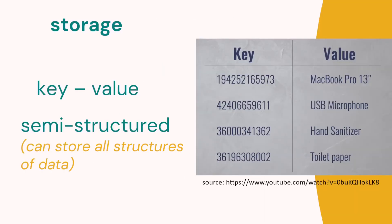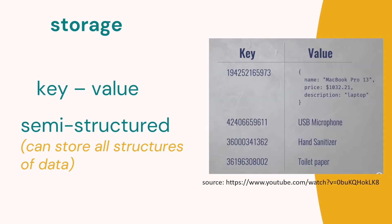With big data it's too big to be stored in a traditional database, so we need to store it in a simpler way. We can use the key-value pair, which is kind of semi-structured, although we can store different structures in big data. You can see here we have simple keys and simple values, but we can change the value to a different format if we wish.